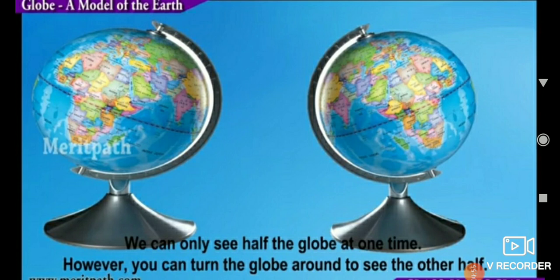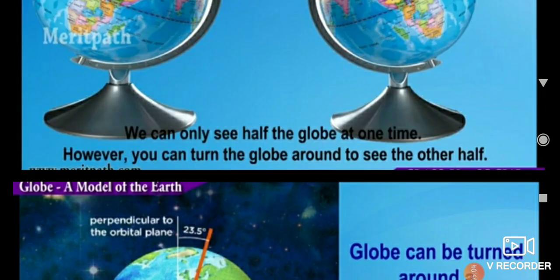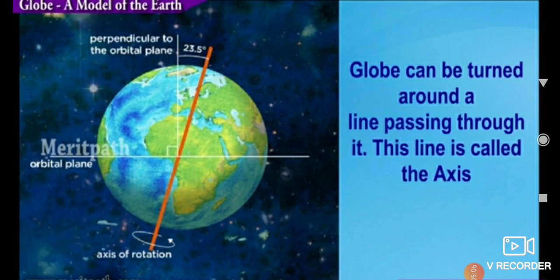We can only see part of the globe at one time; however, you can turn the globe around to see it all. The globe can be turned around a line passing through it. This line is called the axis.